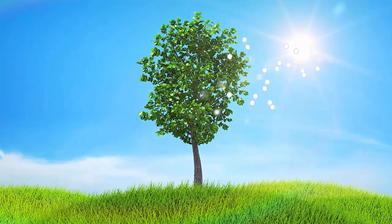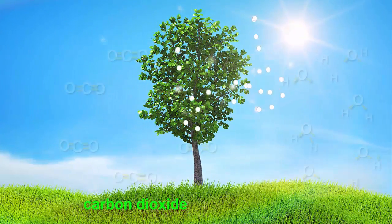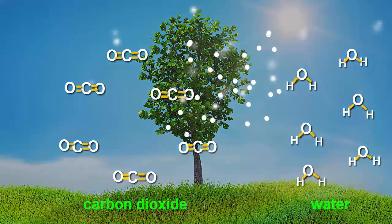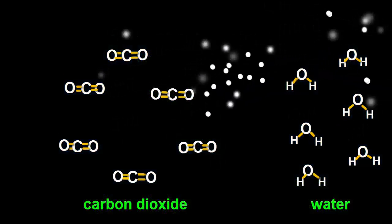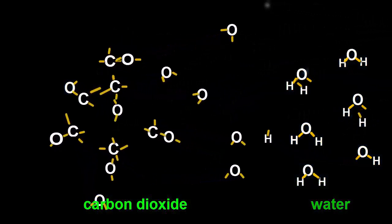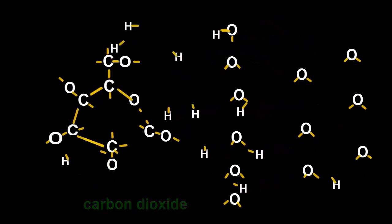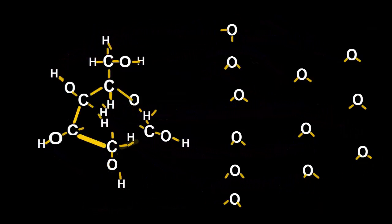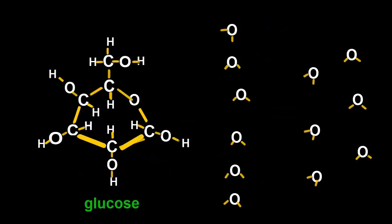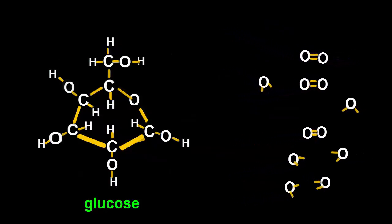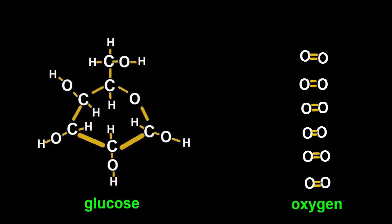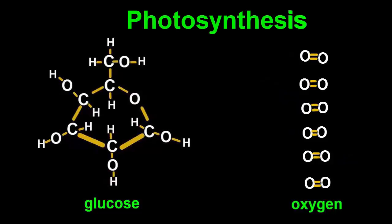From earlier videos, we saw how plants can take carbon dioxide from the air and water from the soil and, using sunlight, rebuild them into high energy glucose molecules and oxygen molecules which are released into the air. This process is called photosynthesis.